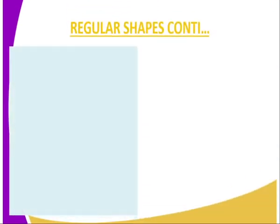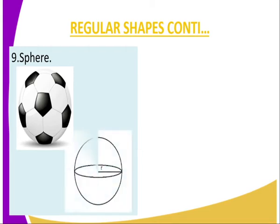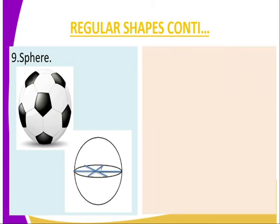For a sphere, such as a ball, you construct the diameters of the sphere. The point of intersection, which is the center of the sphere, is the center of gravity of that sphere.